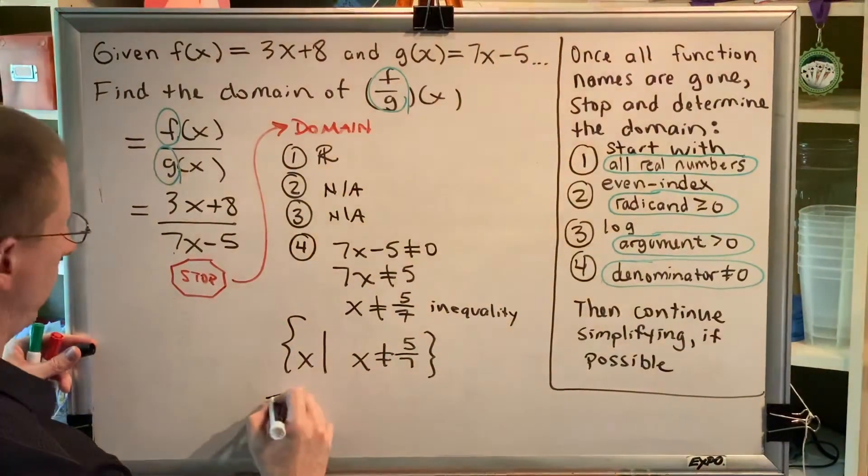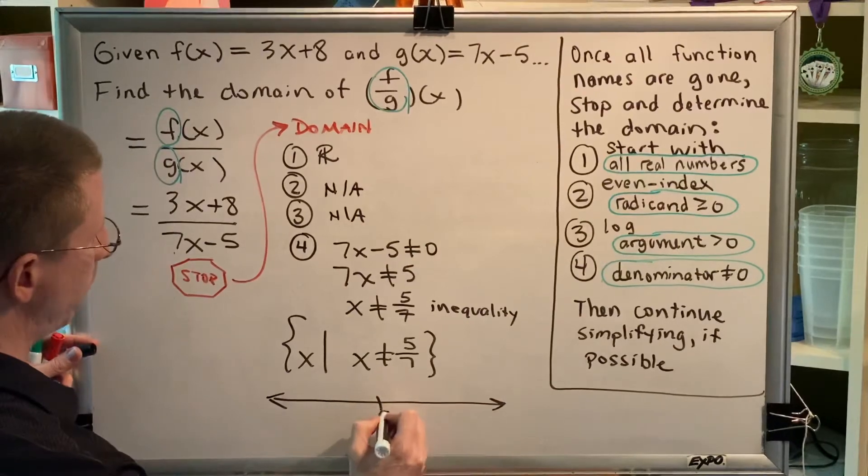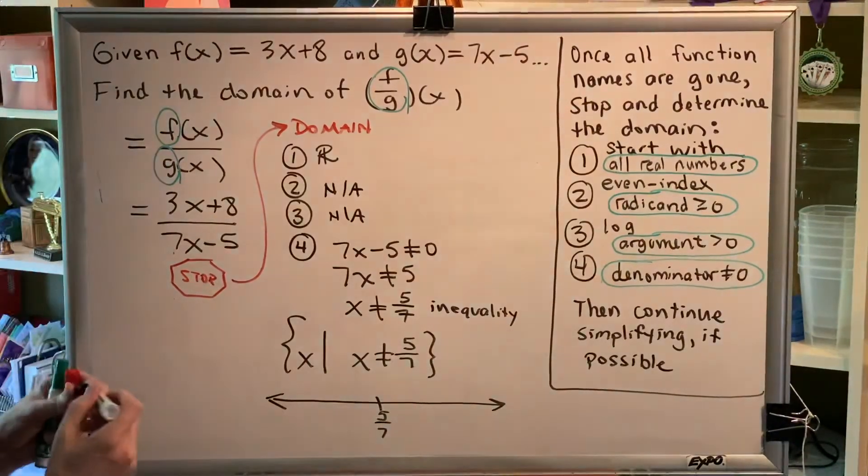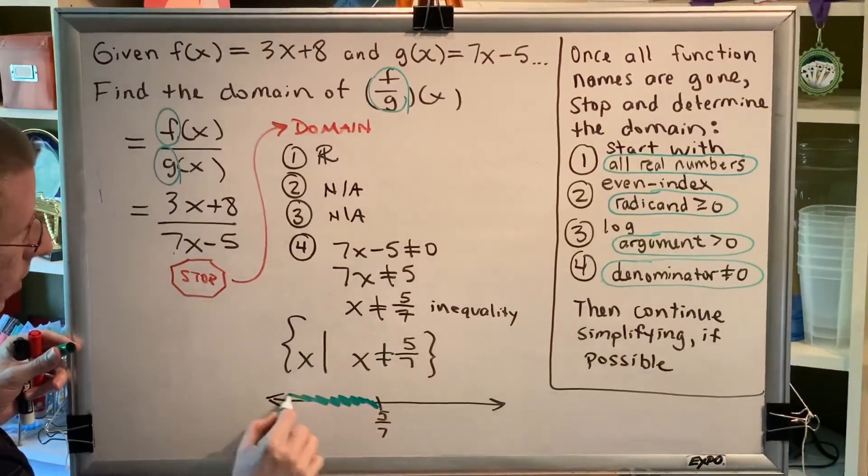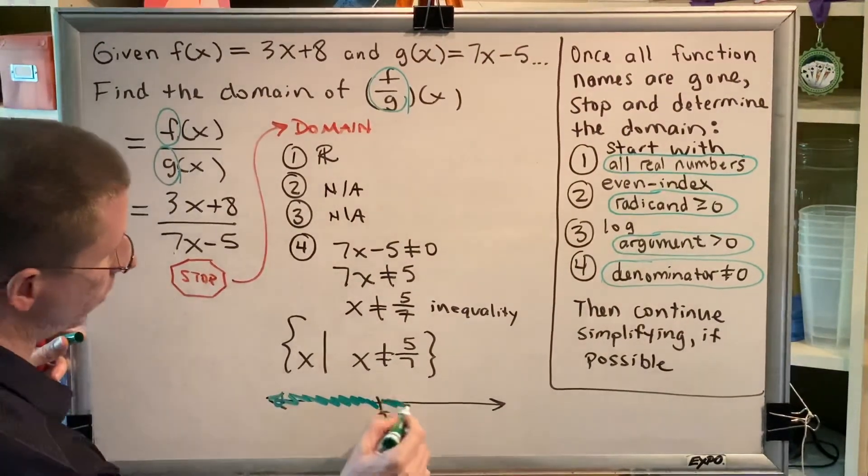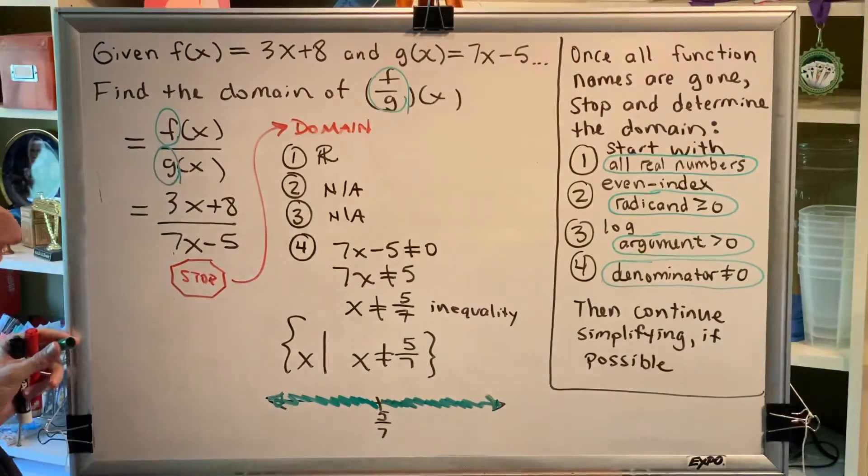As a number line, I would want every number in the world except for 5 sevenths. Which means, I would want every number that is to the left of 5 sevenths, every number that is the right of 5 sevenths, but not 5 sevenths itself.